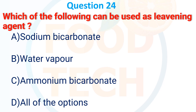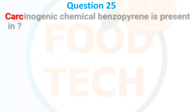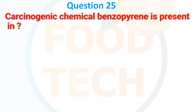Which of the following can be used as a leavening agent? A. Sodium bicarbonate, B. Water vapour, C. Ammonium bicarbonate, D. All of the options. The answer is D. All of the options.